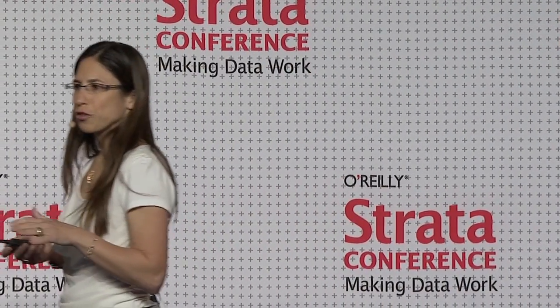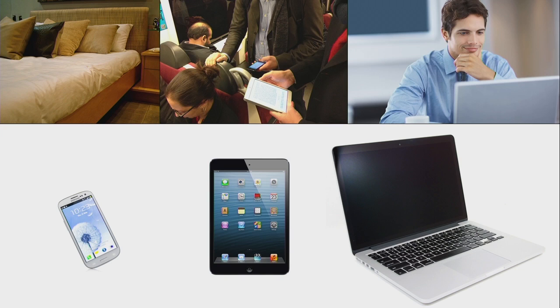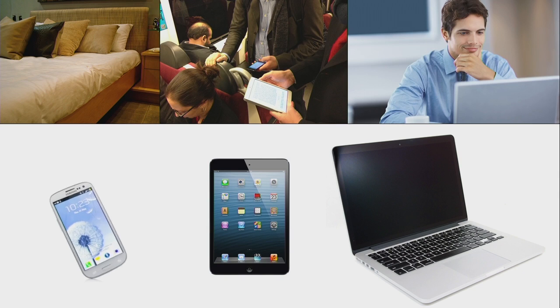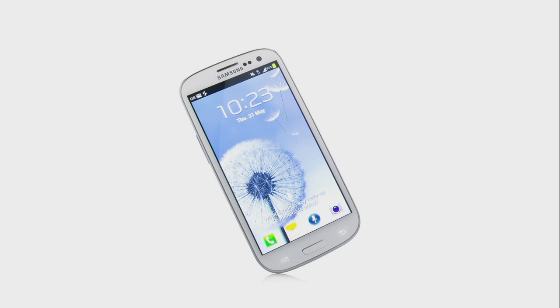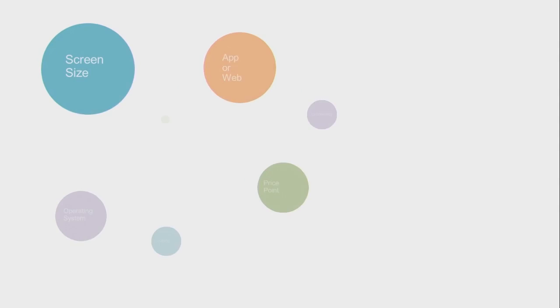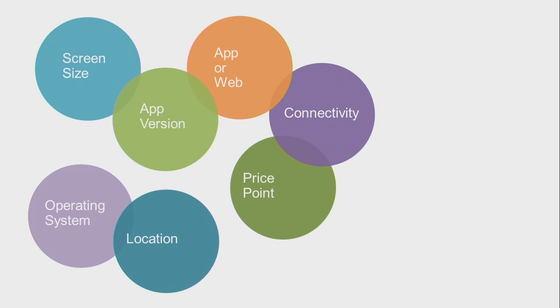You might think, I'll track phone, tablet, desktop, and I'm good to go, right? Not exactly. Let's take a look at this phone user. This is not just a phone — it's specifically an Android phone, and not just any Android phone. It's actually a Samsung Galaxy S3, and that matters. There's a lot of variability within that Samsung experience: screen size, whether they're using app or web, what connectivity they have, what price point, the location that they're in. Everything matters. Because if the goal is to optimize the user's experience, to make it engaging and delightful, then all of these will come into play. And if we don't take these into account, it impacts our understanding of what that experience is at that point in time.